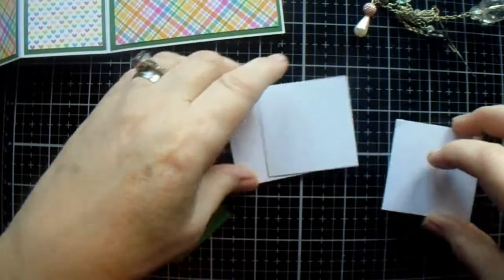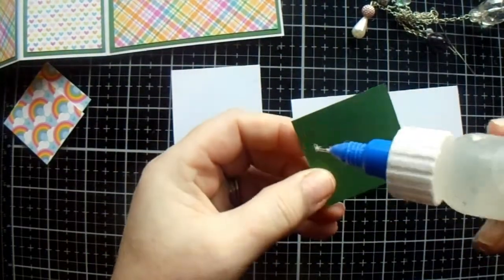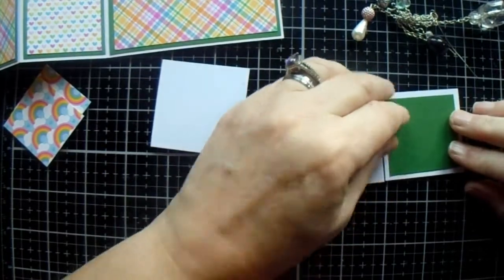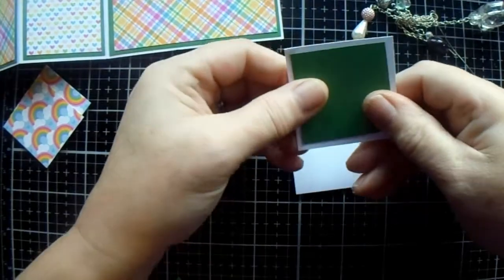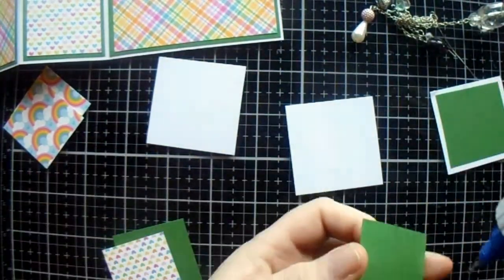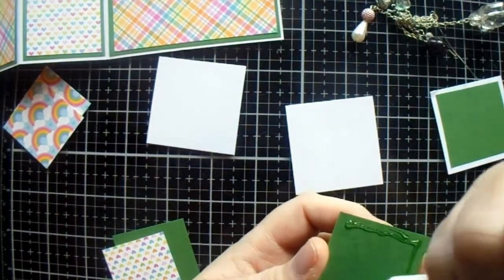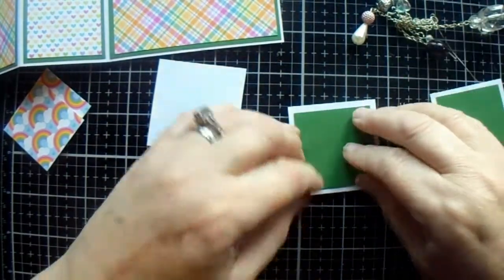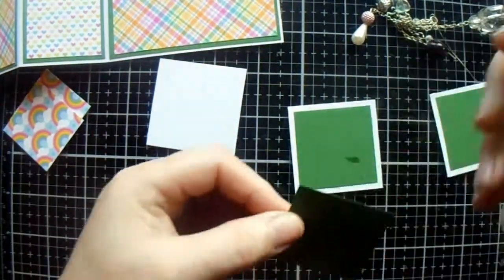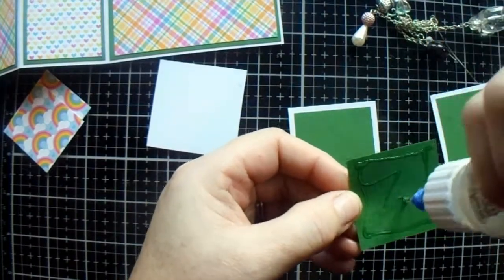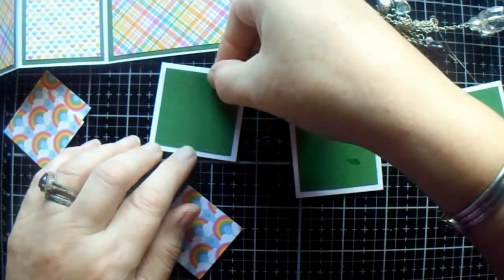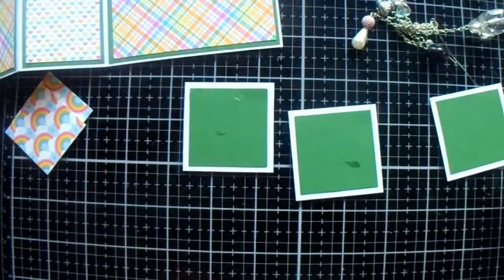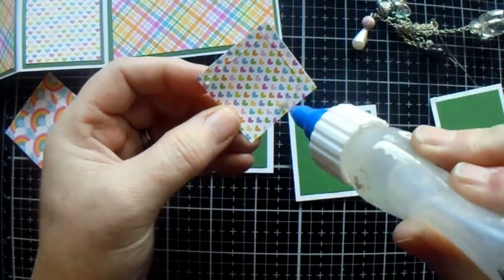You need 3 squares in white that are 2 by 2. Three in green that are 1 and 3 quarters by 1 and 3 quarters. And then 3 pattern pieces of paper that are 1 and a half by 1 and a half. You can get a strip of 6x6 paper and get all 3 pieces of pattern paper out of it.